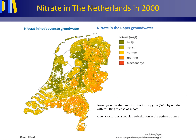Groundwater can be polluted with nitrate from farming activities. In the Netherlands, this led to high nitrate concentrations in the upper groundwater. You can see for this part of the Netherlands quite high values from 50 to 150 milligrams per liter in the upper groundwater. However, in the lower groundwater, nitrate levels are low.